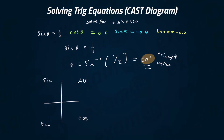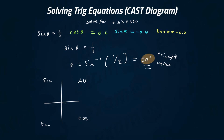If you have a negative angle, which sometimes your calculator gives you, instead of going anti-clockwise you just go clockwise. So if I wanted to mark minus 20 degrees, you'd go clockwise — that is minus 20 degrees. You don't have to write the minus because it's implied.